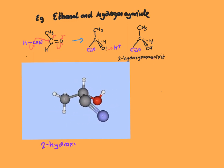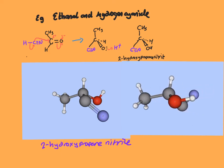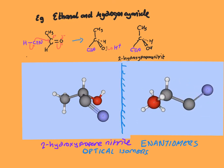Here we have the 3D representation of 2-hydroxypropanenitrile, and here is its mirror image. These two molecules are identical apart from the fact that the atoms are arranged differently in space — we call these molecules optical isomers. This arises when you have four different groups around a carbon atom, and we'll be looking at optical isomerism as a whole topic on its own later.